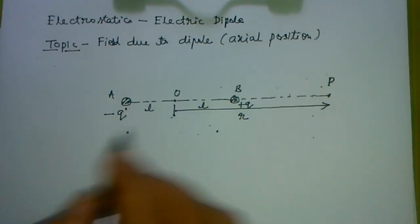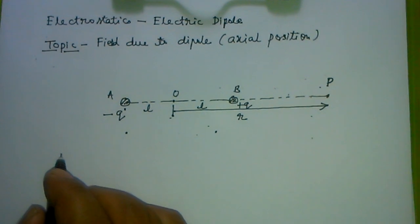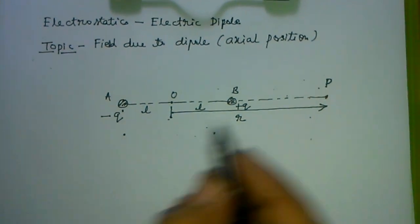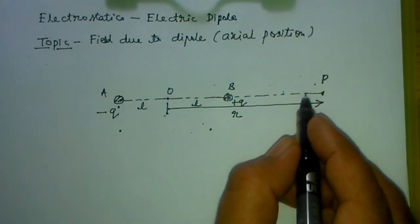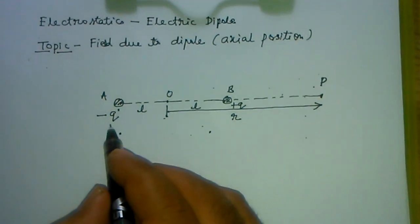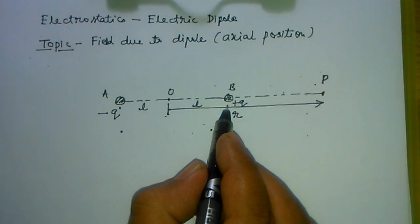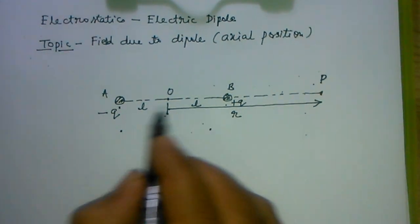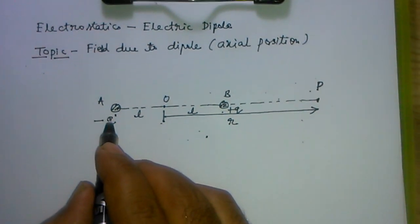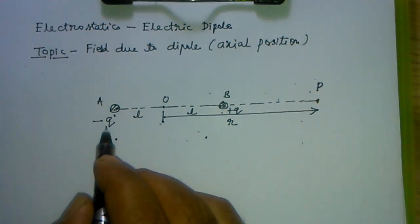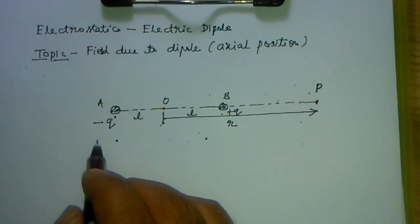To find the field at P, the total electric field at point P will be the sum of the field due to the positive charge and the negative charge, using the superposition principle.